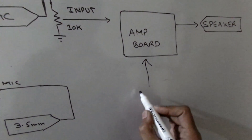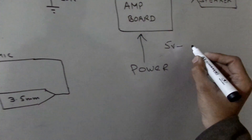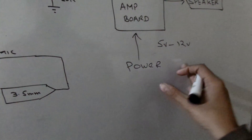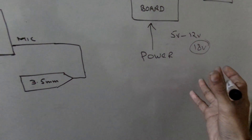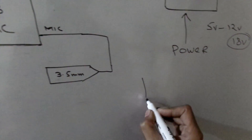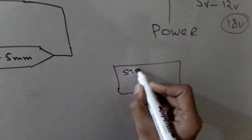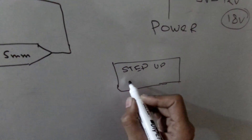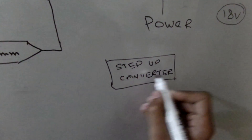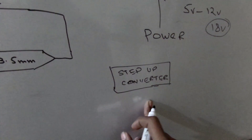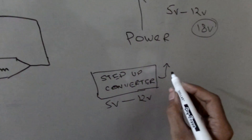This amplifier can be powered up by a voltage range between 5V to 12V, up to 18V. I could also use a step-up converter, which could step up 5V to 12V to drive this amplifier board easily from the USB port, as we already know the USB port has 5V. But since I could also power this at 5V only, I didn't need that.